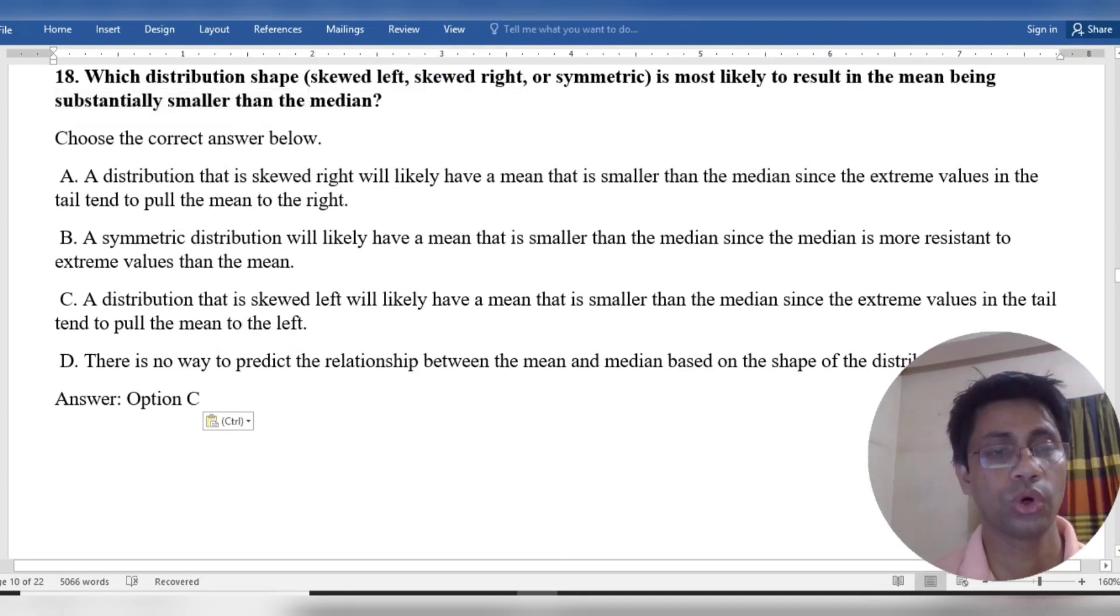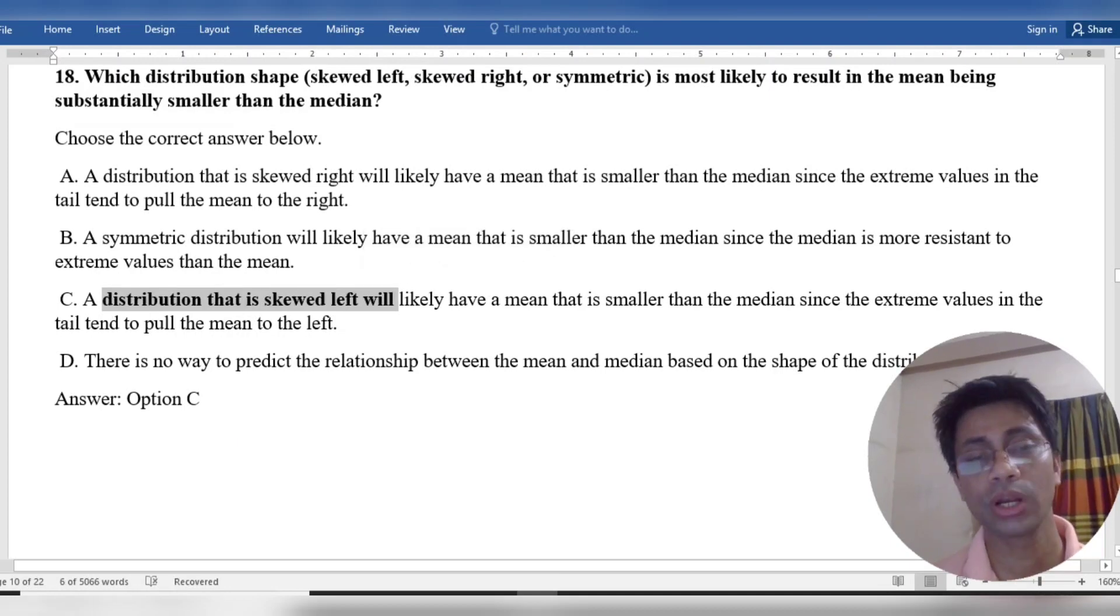So, our answer is: a distribution, i.e., skewed left, will likely have a mean that is smaller than the median since extreme values in the tail pull the mean to the left.